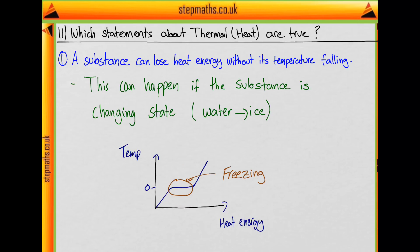In this freezing process, intermolecular bonds are being formed between the water molecules, and this gives out energy. So energy is being lost from the substance and goes to the surroundings, which keeps the temperature from falling. It stays at zero degrees until all the water is frozen and you just have ice. So statement 1 is true.